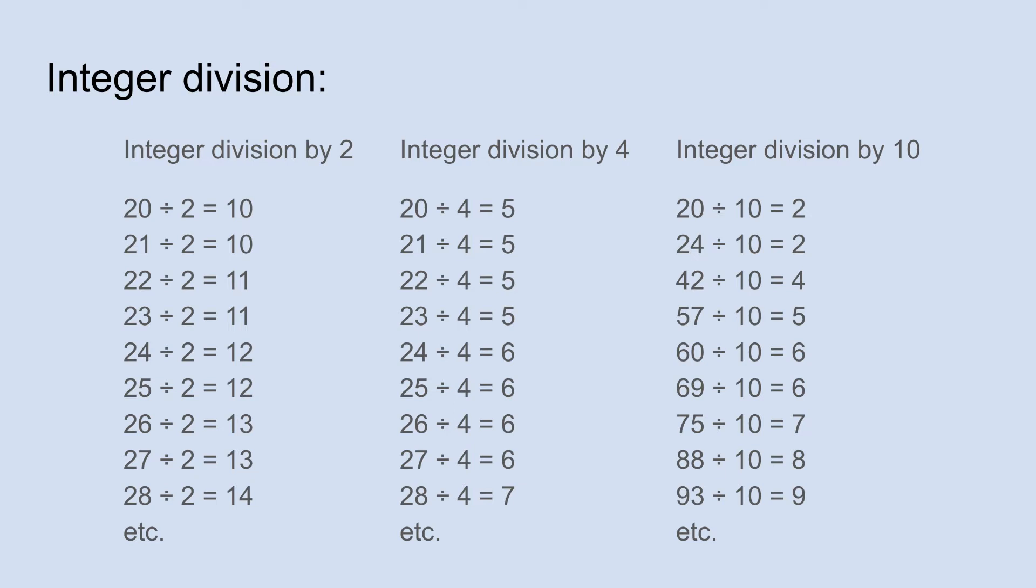So again, we're just ignoring the remainder. So 20 divided by 4 is obviously 5, but so is 21 divided by 4, 22 divided by 4, and 23 divided by 4. We don't get to 6 until we get to 24 divided by 4. And you can see the rest of that progression.